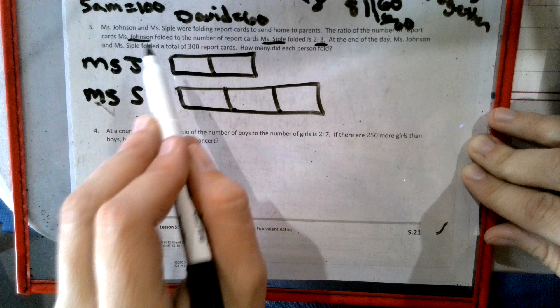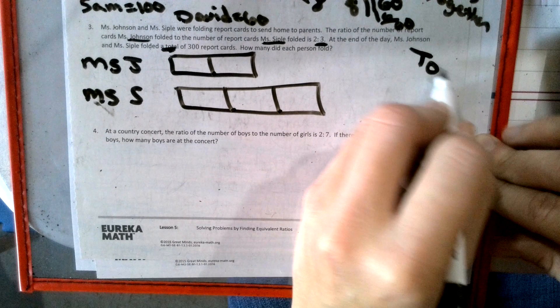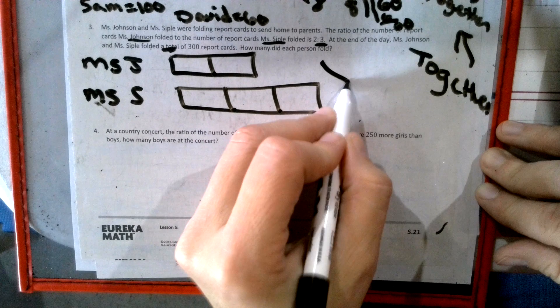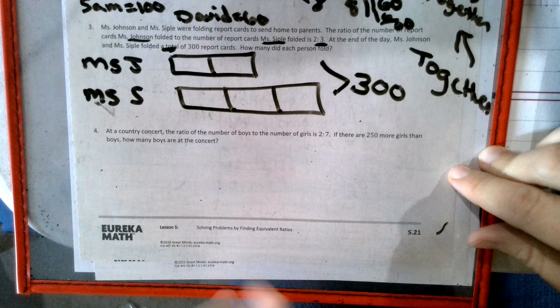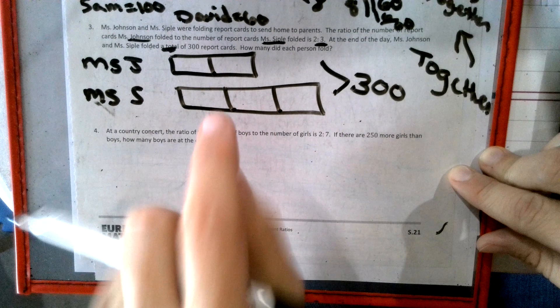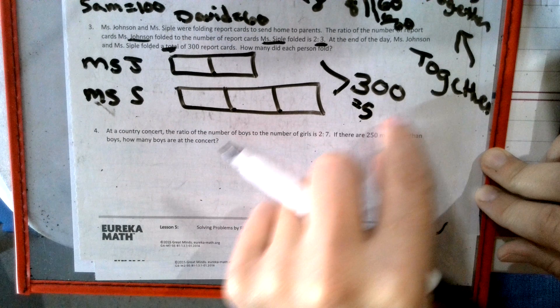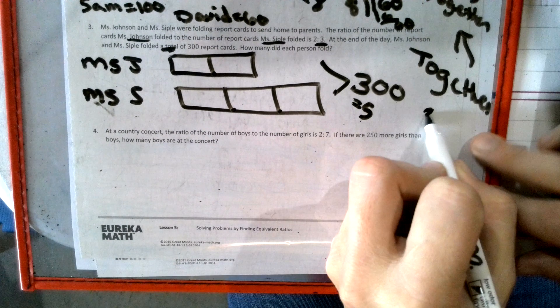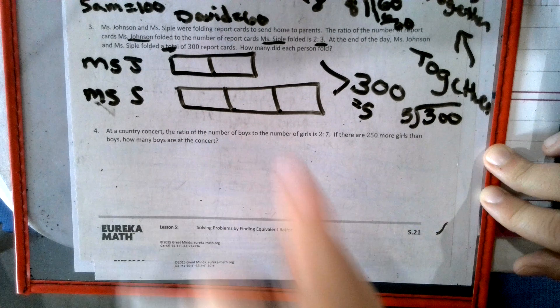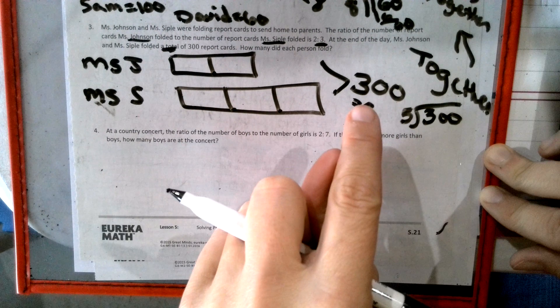It says at the end of the day, Miss Johnson and Miss Sipple folded total, that's another word for together, just like that one above. Together, they folded 300. So how many boxes do they have together? One, two, three, four, five. That's five. So we have to divide these two numbers. So we take 300, and we divide it by five to find out what number goes in each box. Together, we add the boxes and divide into it.